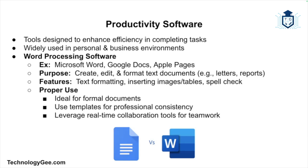Our first category is productivity software — these tools help individuals and businesses perform tasks more efficiently. The first type is word processing software, which is essential for creating, editing, and formatting text documents. The most well-known example is Microsoft Word, but there are others like Google Docs and Apple Pages. It's used to create documents like letters, reports, and essays, and provides tools for formatting text, inserting images, tables, and other media, and checking spelling and grammar. Use templates for consistent formatting, and leverage real-time editing features in tools like Google Docs for collaboration.